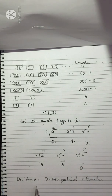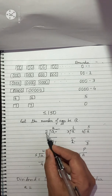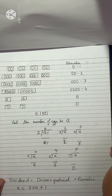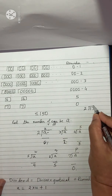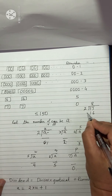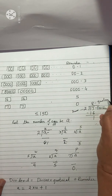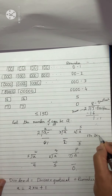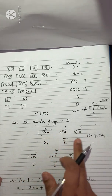We know that dividend equals divisor into quotient plus remainder. Here, A is the dividend. A is the dividend, divisor is 2, and quotient is U, plus remainder 1. For example, if we are doing 17 divided by 2: 17 is the dividend and 2 is the divisor, so the quotient is 8 and remainder is 1. So we can write: dividend 17 equals divisor into quotient — 2 into 8 plus remainder 1 — which is 16 plus 1, equals 17.